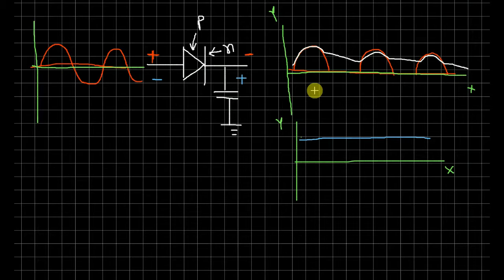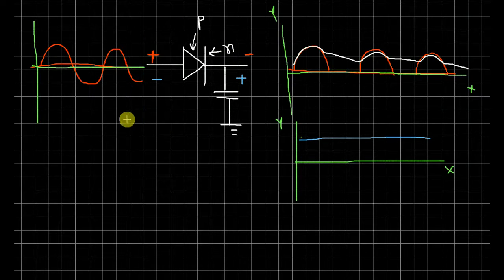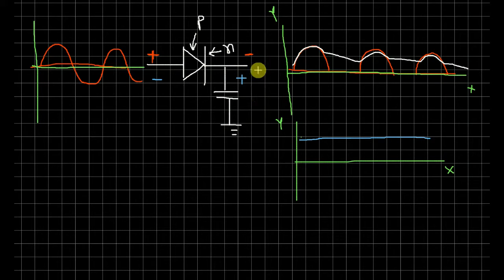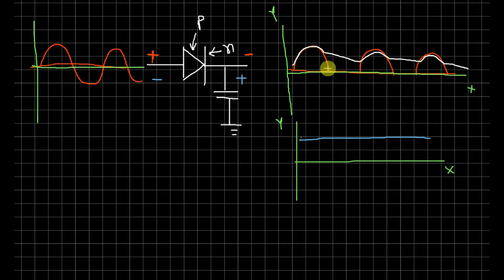This process is called half wave rectification. The diode passes only half the cycle. However, to improve efficiency, we use a full wave rectifier, which utilizes both the positive and negative half cycles.